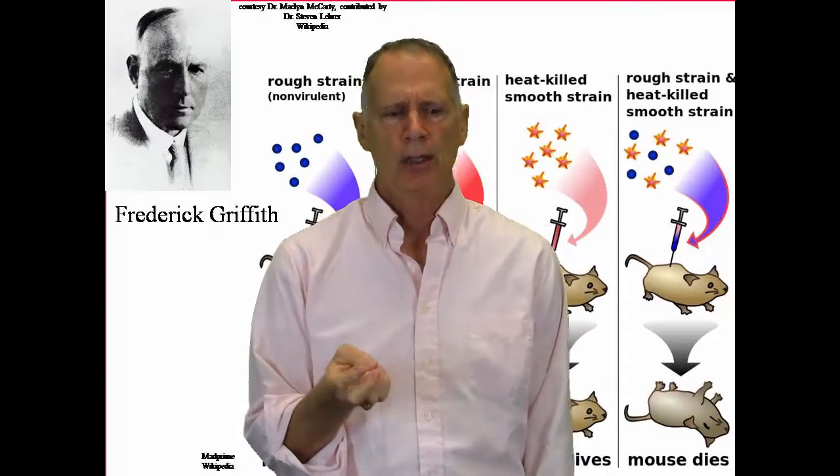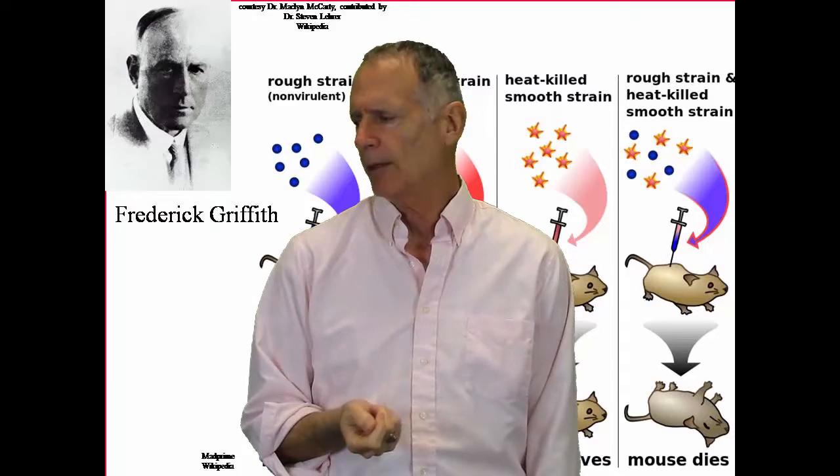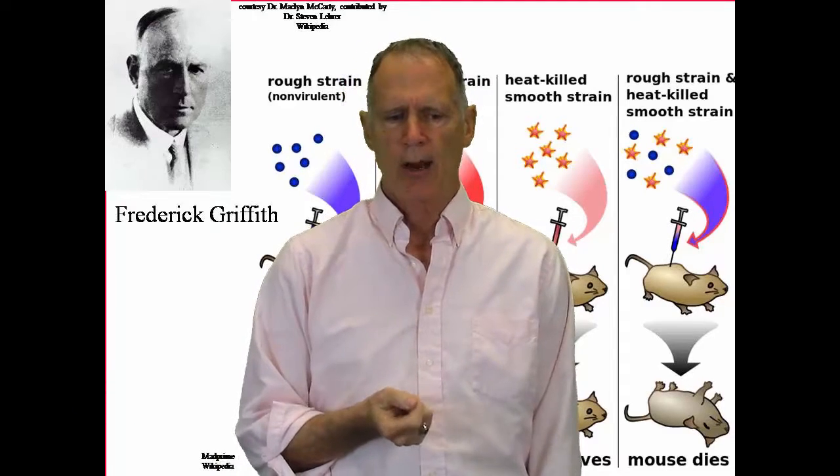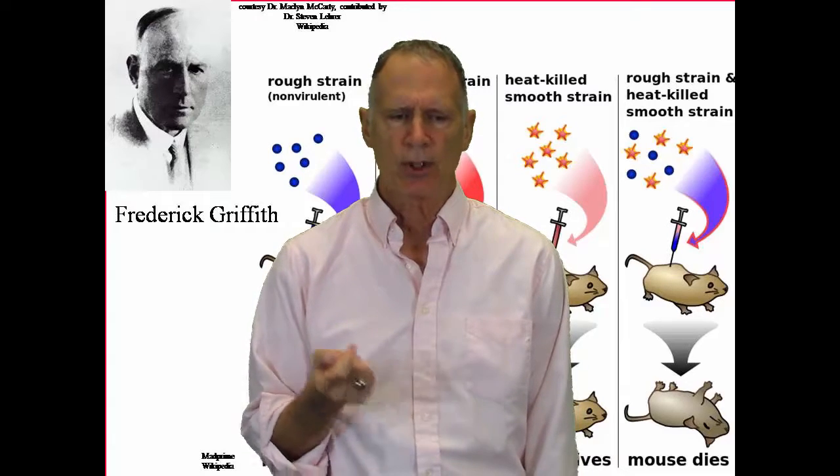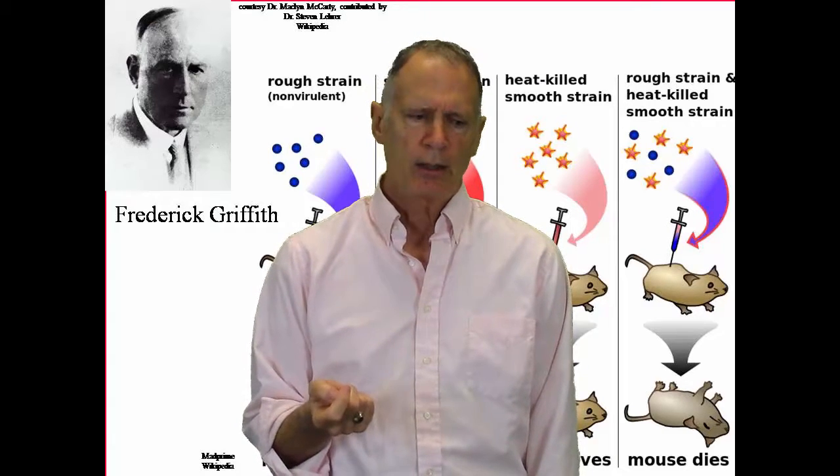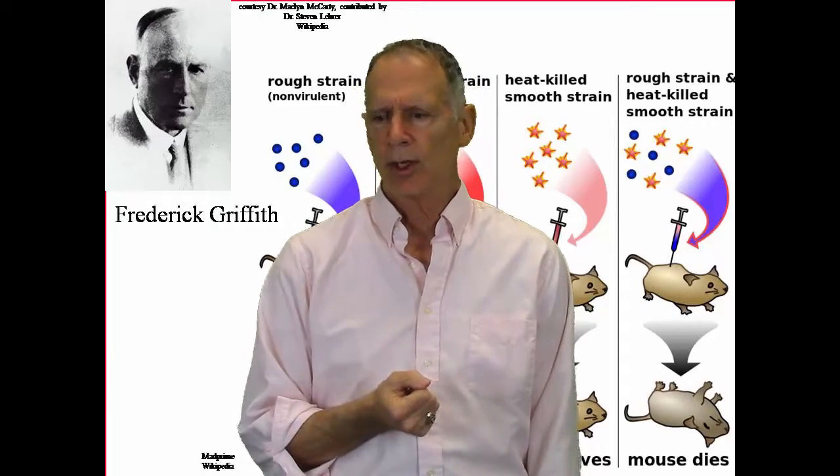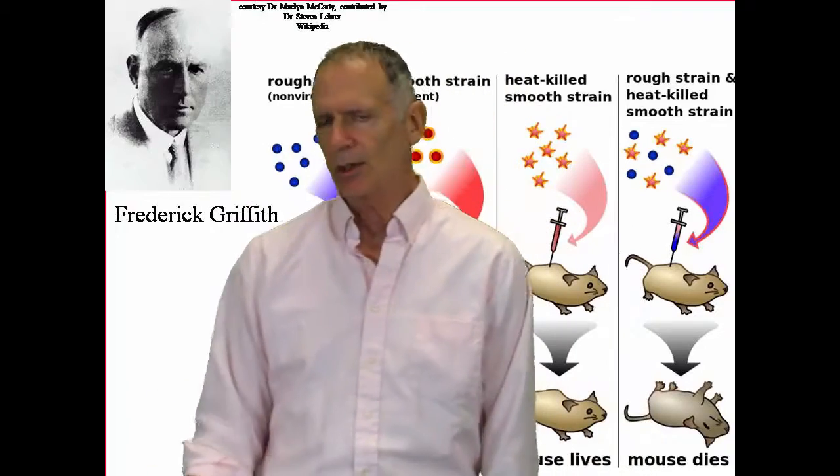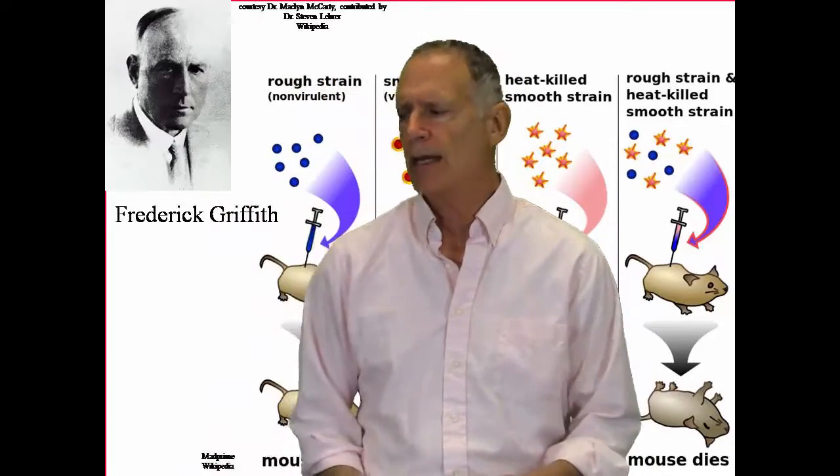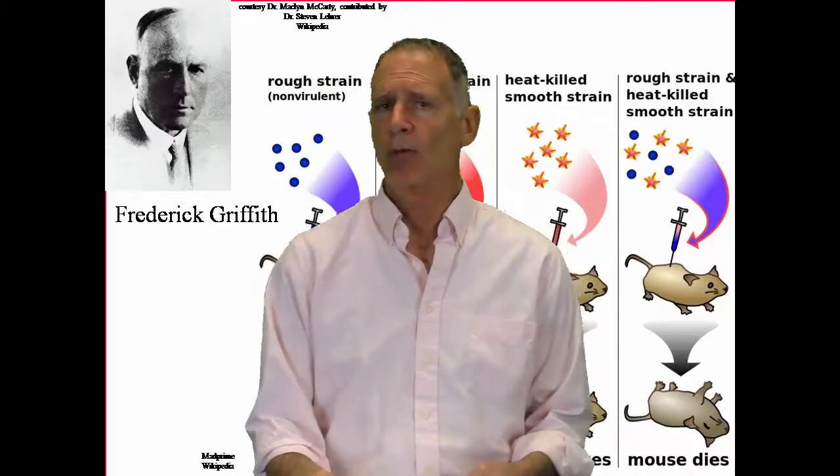Something is making that rough strain turn into a virulent strain, a smooth strain. And he's able to culture it from the dead mouse and find out that it's a smooth, virulent, live strain. So something is happening to convert the rough strain to a smooth strain that's a killer. So he then starts working on this, and he's able to get this to happen in the lab. It doesn't have to go through the mice. And he realizes that it's related to genetics. He calls it an S-transform. And one of the sad things is that in 1941, of course, World War II had started, and the Germans were bombing London extensively. Griffith was in London. His laboratory was in London. And he was working in his lab one night, and there was an air raid. And so rather than run to the local shelter, he stayed in his laboratory. The laboratory was bombed, and he died.